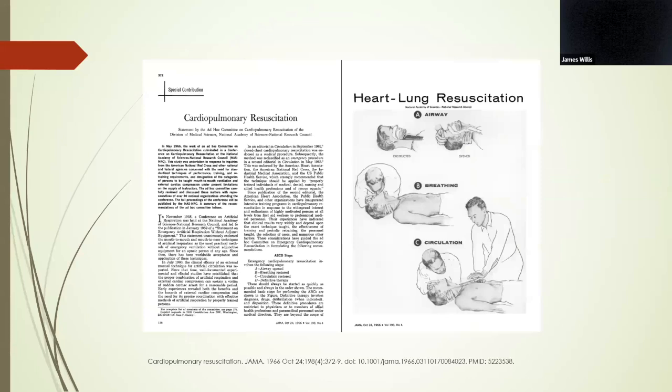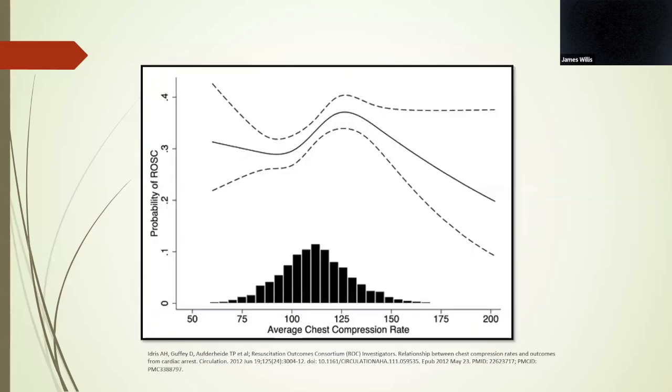So what about the rate of compressions? In concordance with that study of the initial one on closed chest compressions, the initial CPR guidelines which were made in 1966 recommended a compression rate of 60 times per minute after ensuring that the airway was patent and that rescue breaths were being provided. So A, then B, and then C.